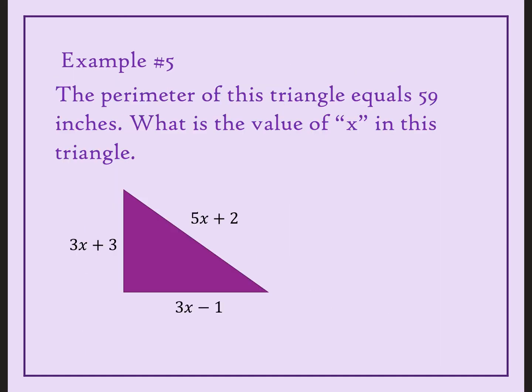And actually, this is our last question. So we have a triangle here. It says the perimeter of this triangle equals 59 inches. What is the value of this x in this triangle? Well, perimeter means we are going to add all the sides together. So if I add all the sides together, 5x plus 2 plus 3x plus 3 plus 3x minus 1, I'm going to set it equal to the total perimeter. So I have a lot of like terms here.